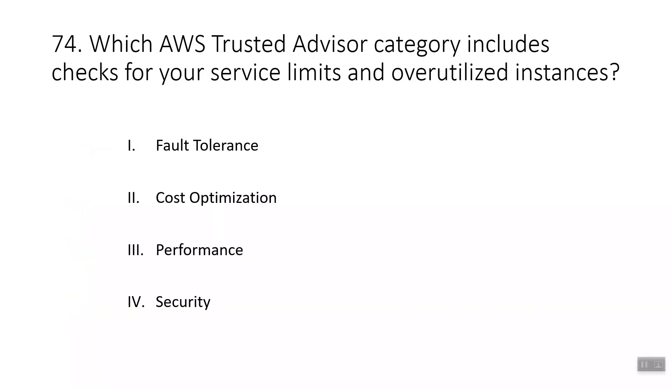Question seventy-four: which AWS Trusted Advisor category includes checks for your service limits and over-utilized instances? The correct answer is Performance, which helps improve your services by providing recommendations. Fault Tolerance helps improve application availability and redundancy. Cost Optimization checks for unused resources. Security helps review your permissions and identity.